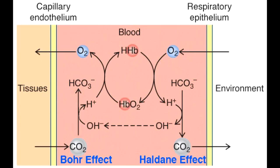After oxygen unloading has occurred, the taut form of hemoglobin will bind the carbon dioxide and transport it to the lung. The third form is dissolved carbon dioxide, which also happens in 5% of the cases. So to summarize: carbon dioxide is transported as either bicarbonate, as carb-amino hemoglobin, or as dissolved carbon dioxide.